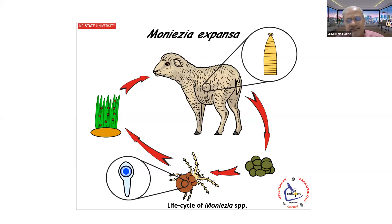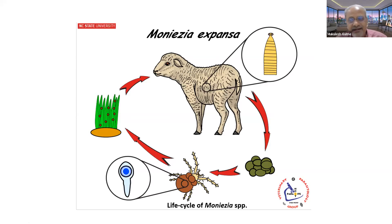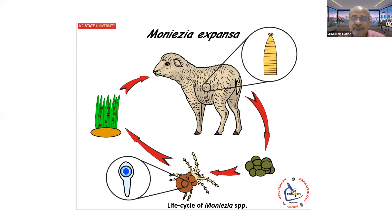These oribatid mites have a typical tendency: during the early part of the day — early in the morning or late in the evening — these mites migrate onto the grass blades because there are dew drops. These are exactly the timings when animals are usually let loose for grazing, and that is how they readily become infected with oribatid mites containing infective stages of Moniezia and other tapeworms.